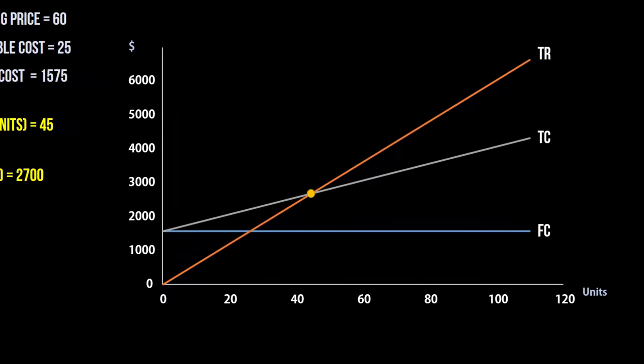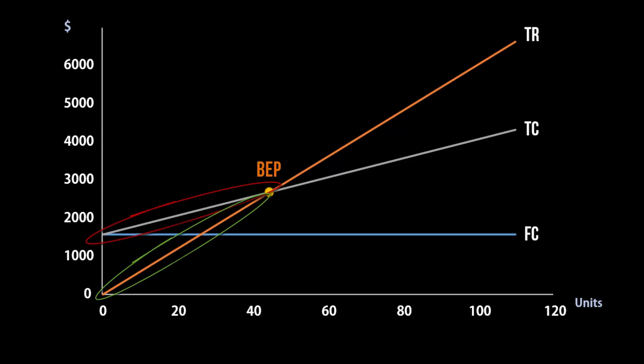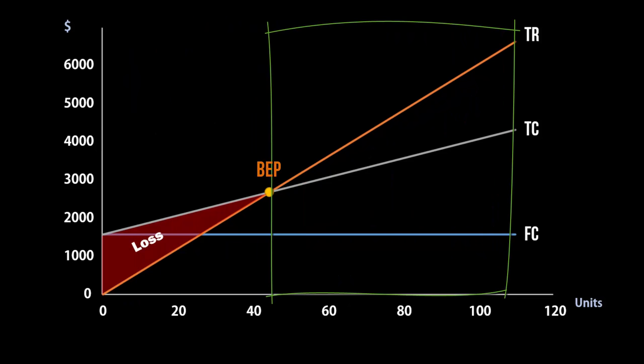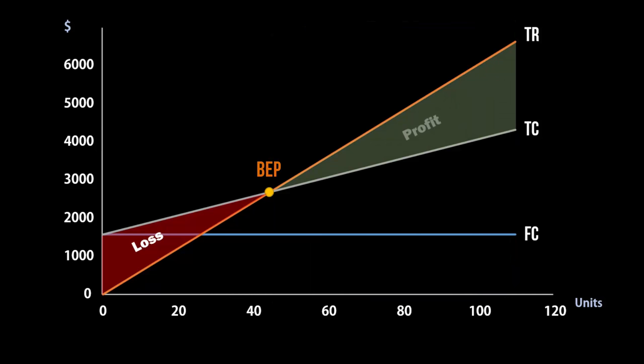Now before breaking even, the total cost is higher than total revenue. So this region here constitutes losses. And after breaking even, total revenue is greater than total cost. So this region constitutes profit. And that's it. Thanks for watching.